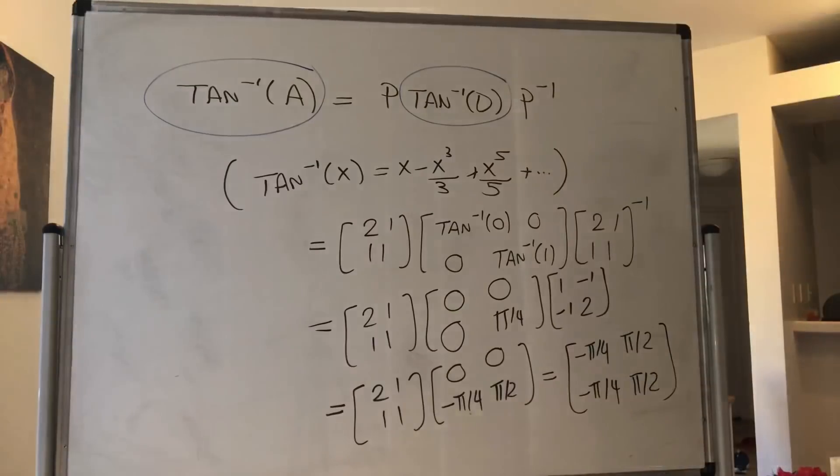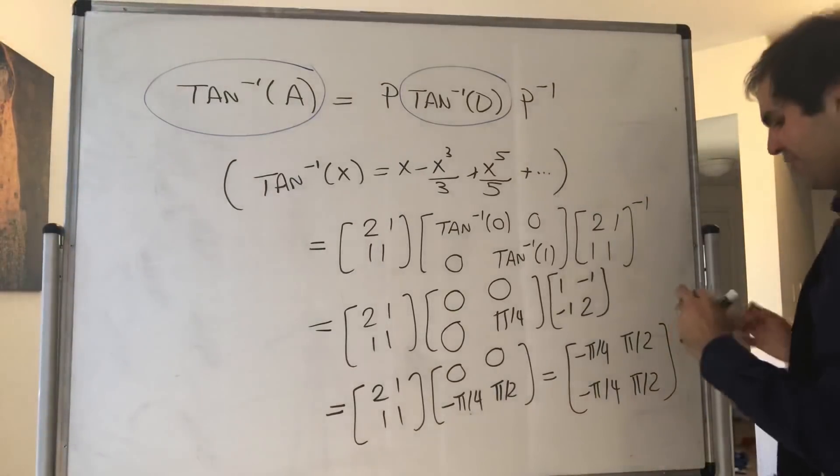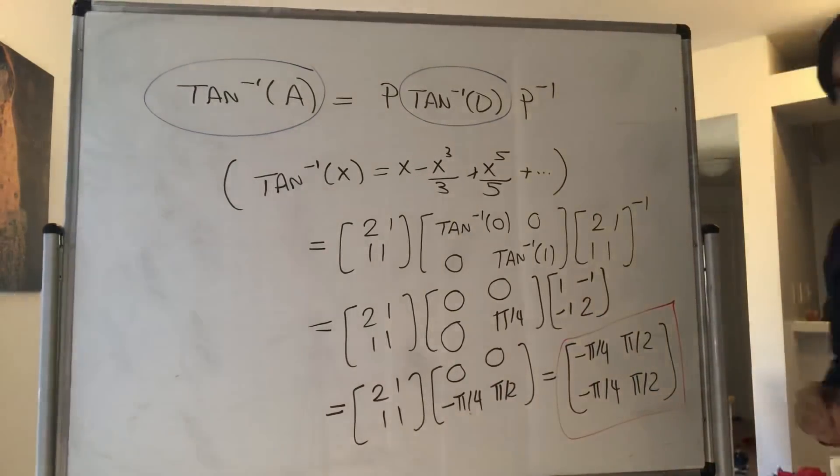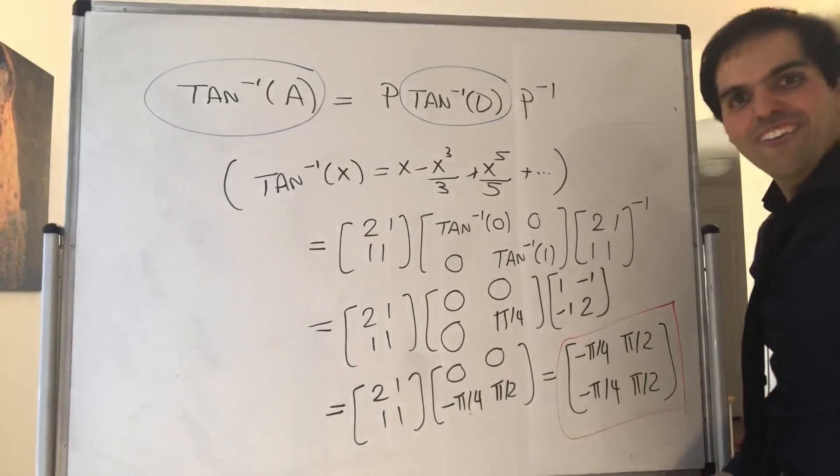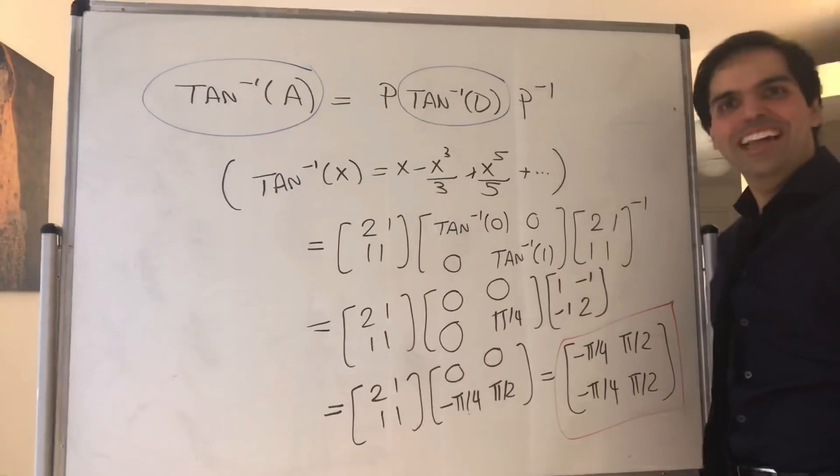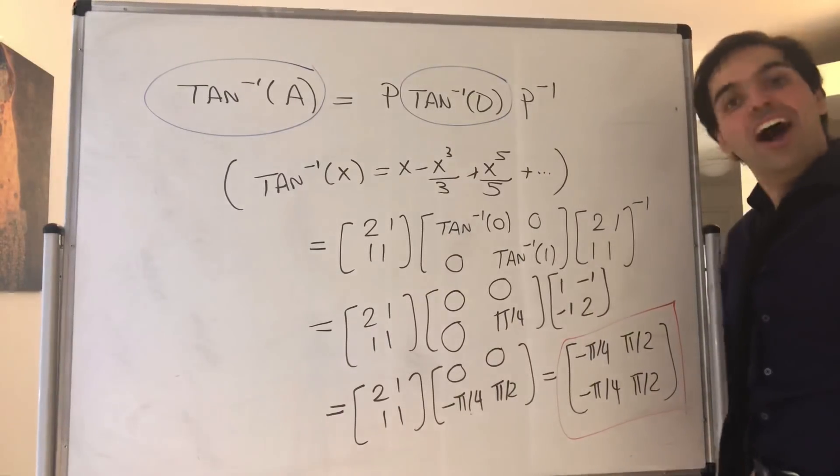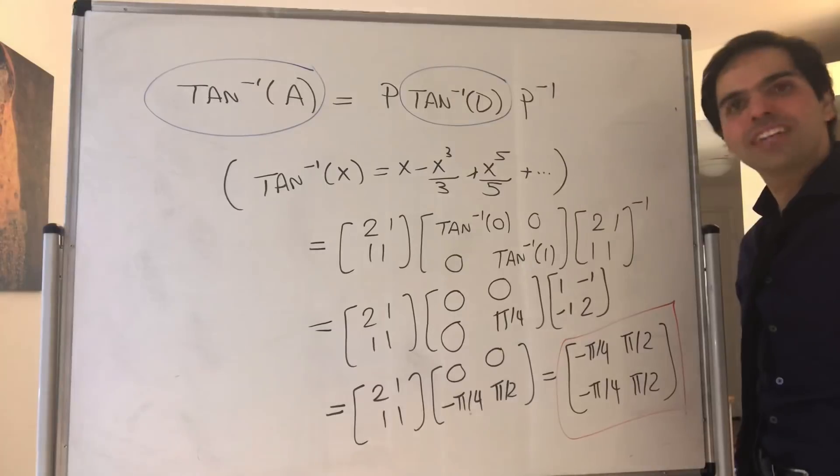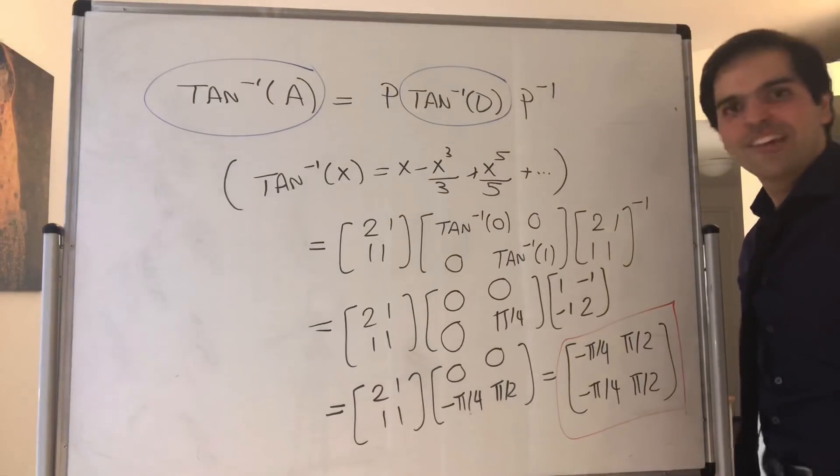So this is, in the end, the arctangent of the matrix. How crazy is that? And what does that mean? I have no idea, but I'm sure there's a quantum mechanics interpretation of this. Alright, I hope you liked this. If you want to see more math, please make sure to subscribe to my channel. Thank you very much.